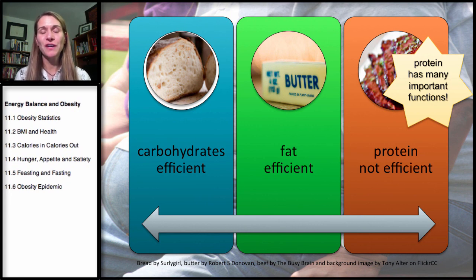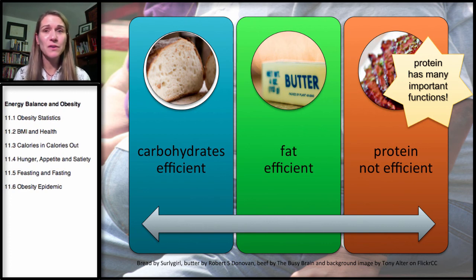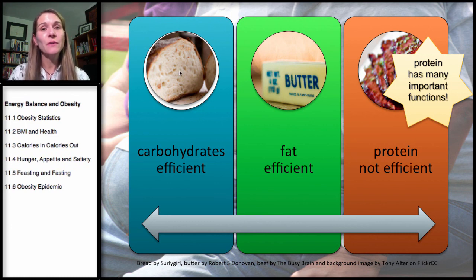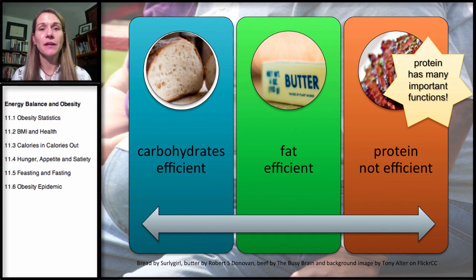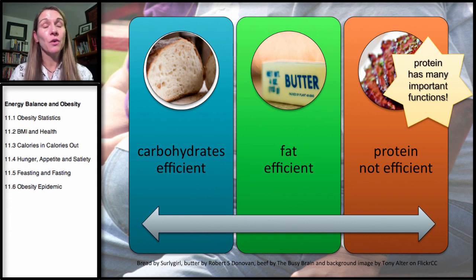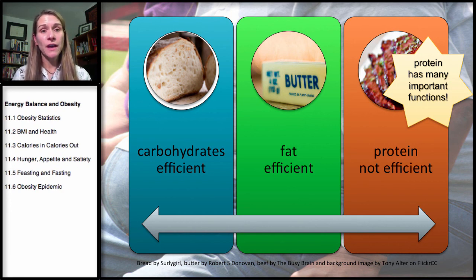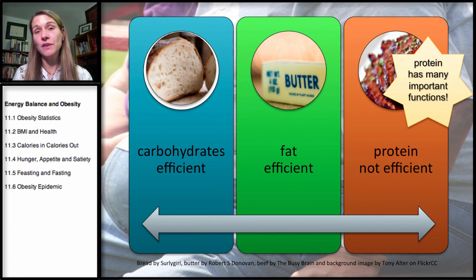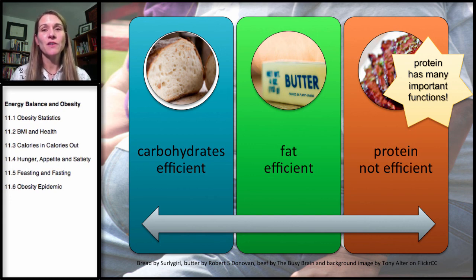We also don't want to use protein primarily for energy, given its many other functions: making skin, ligaments, tendons, muscles, enzymes, antibodies, and maintaining fluid balance. Fat is a great energy store and carbohydrates are a very easy, efficient energy source. This is why a calorie isn't a calorie — and why you can increase energy expenditure by changing your diet composition.